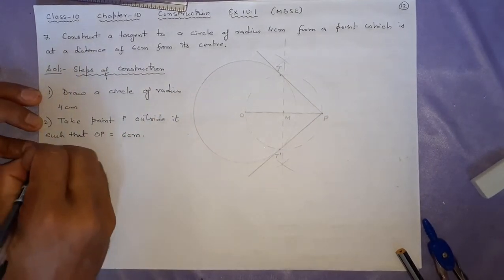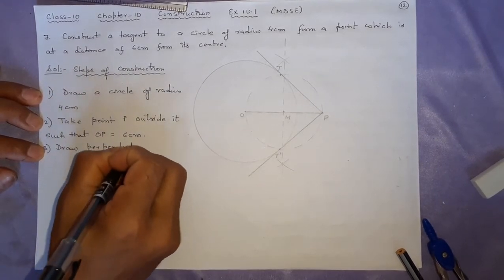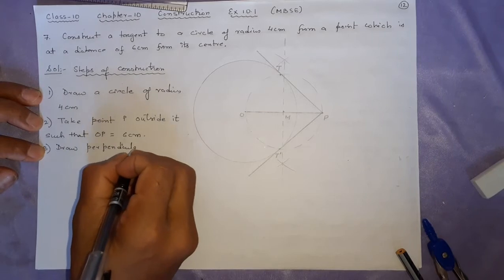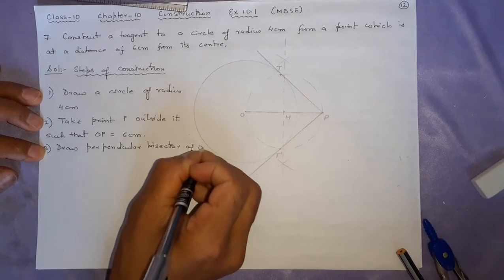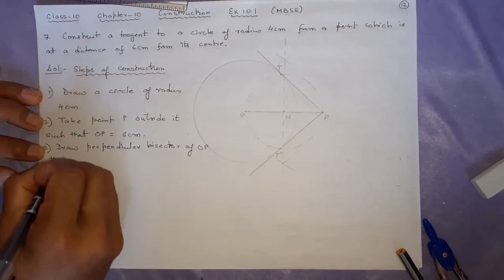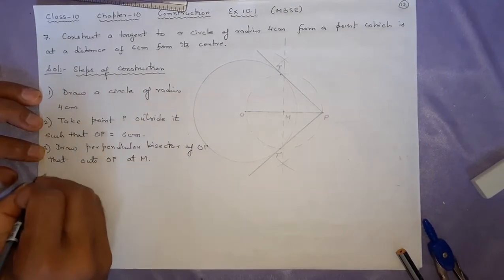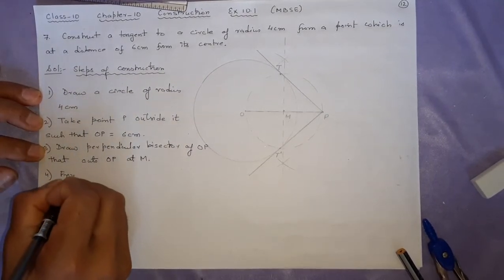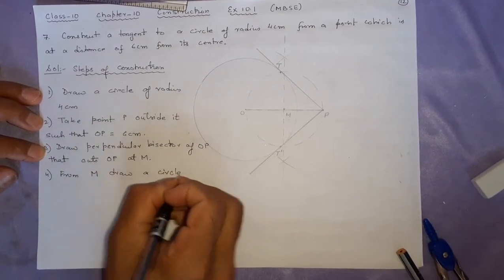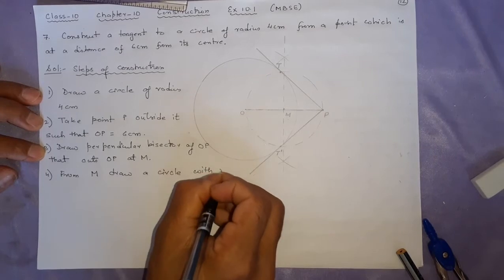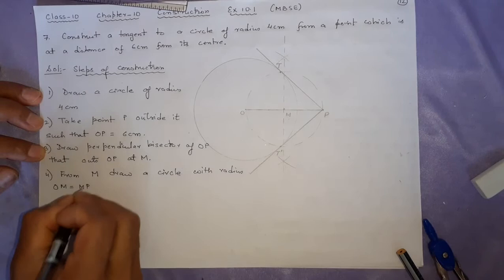Step 3: Draw perpendicular bisector of OP that cuts OP at M. Step 4: From M, draw a circle with radius OM equal to MP.